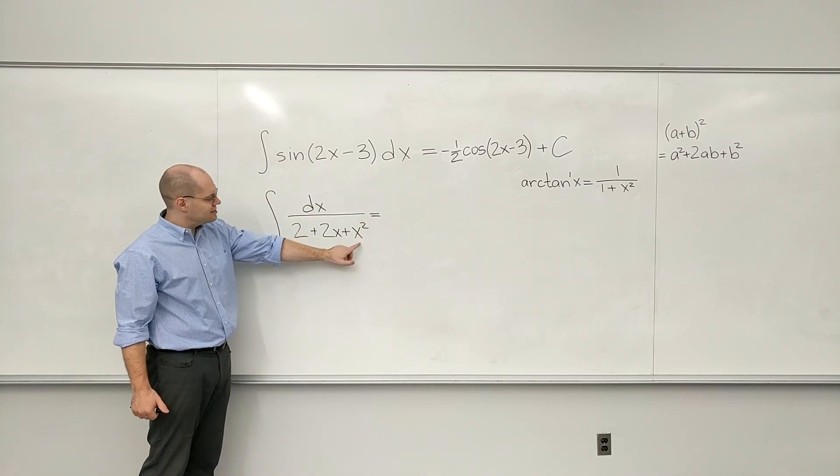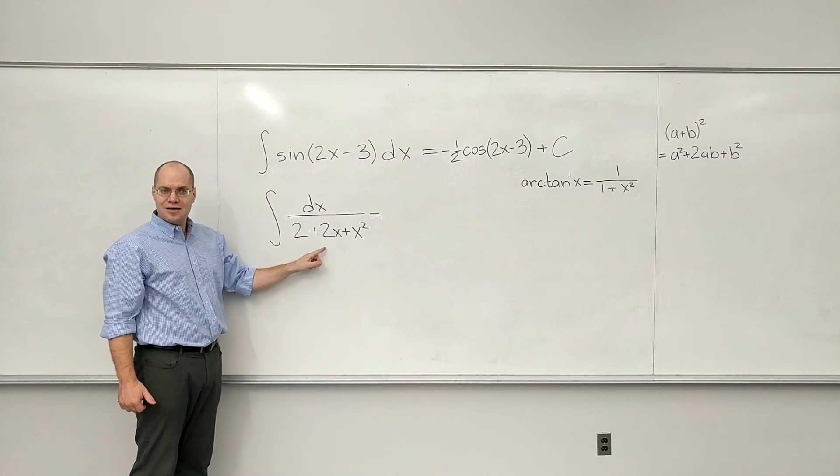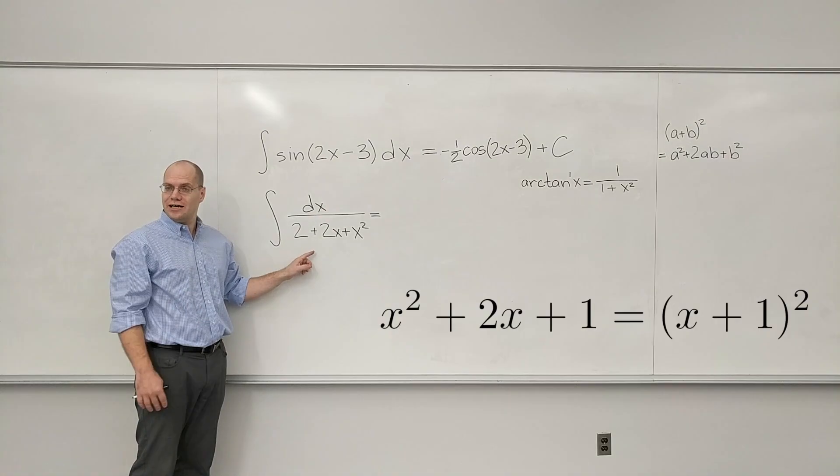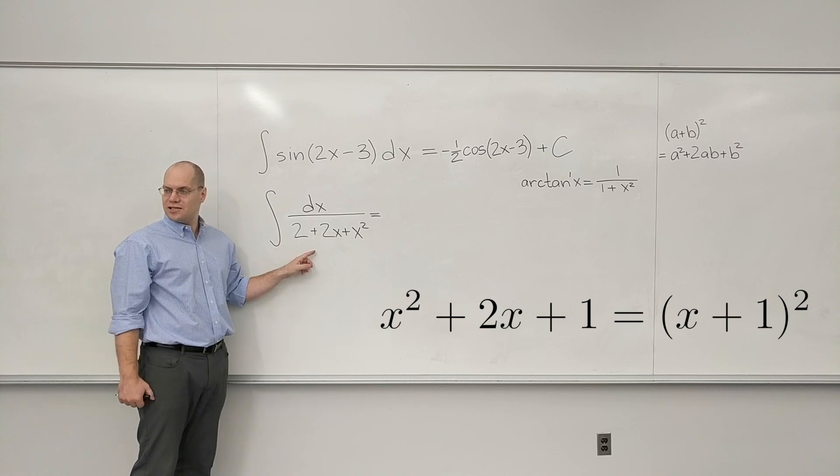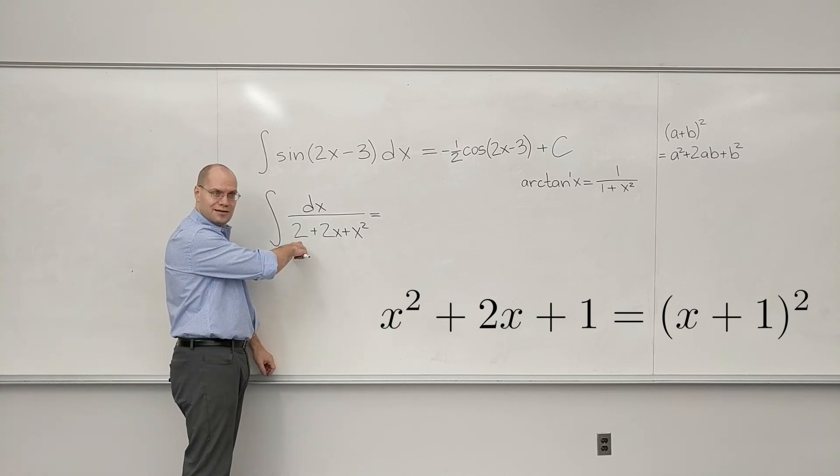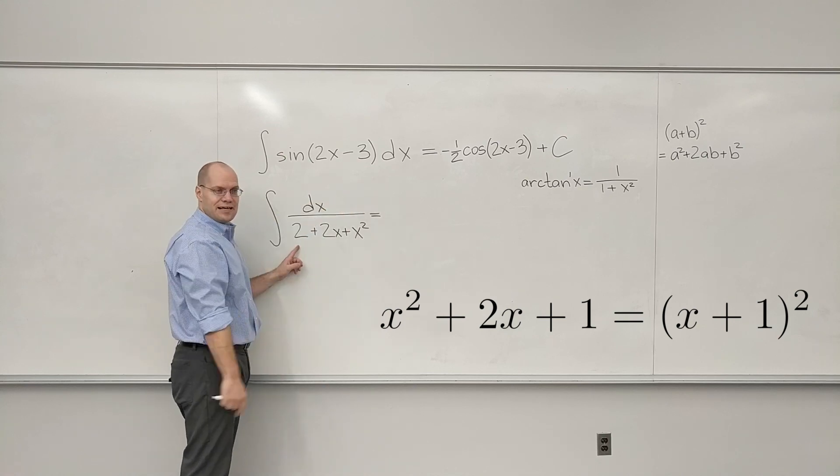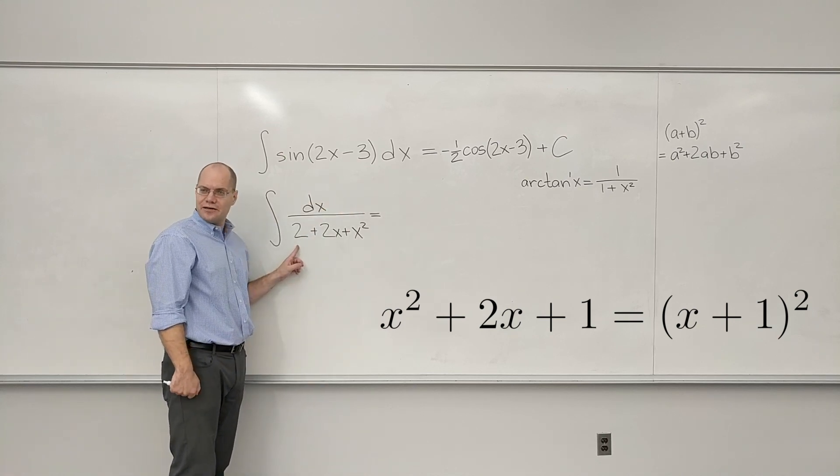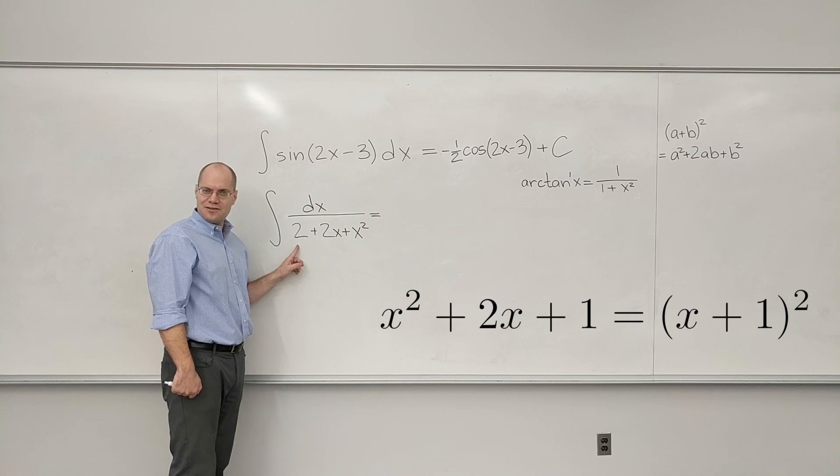So what I almost see here: I see x squared, I see 2x, and I know if I only had plus 1, that would be x plus 1 squared. You guys are with me? Like Christmas, if this was a 1, that would be exactly that formula and it would be (x + 1)². You guys are with me on that?